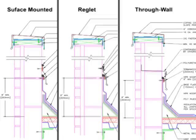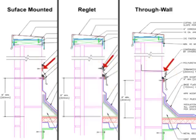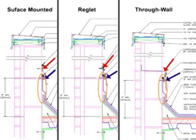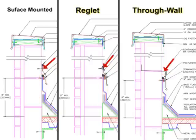As shown in the details, the major difference between the three details is the attachment of the counter flashing over the termination bar. The counter flashing provides critical protection to the termination bar, and the termination bar provides support and waterproofing at the union between the wall and the flashing membranes. As attachment of the counter flashing may vary with both the reglet and through-wall details based on the construction material of the wall, it is important to review the project conditions with your local Garland representative.